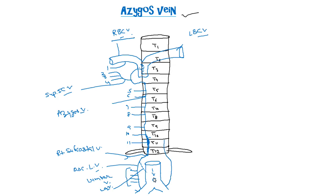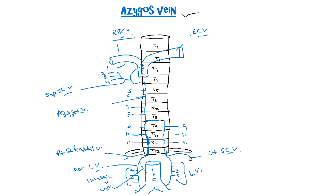Similarly, on the left side we have the ascending lumbar vein receiving the lumbar veins, and the subcostal vein joining with the ascending lumbar vein to form the hemi-azygous vein. It will receive the T9, 10, and 11 posterior intercostal veins. At the level of the lower border of T8 it will join with the azygous vein.